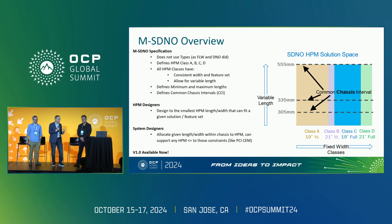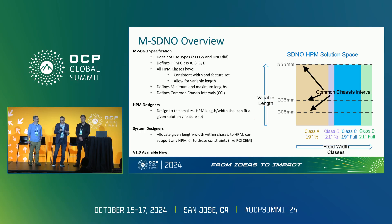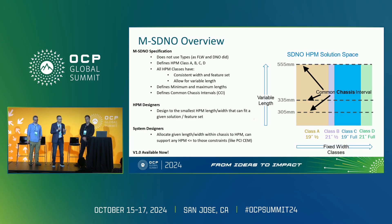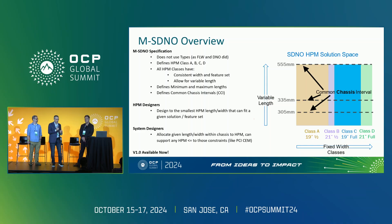If you're an HPM designer, you want to strive for the smallest HPMs for maximum possible adoption. If you're designing a chassis or system, you'd obviously like the biggest volume for HPMs for maximum compatibility, depending on your use case. Class A and class C will be our 19-inch focused form factors — think of A as half-wide and C as full-wide. B and D will be the same for the 21-inch rack, half-wide and full-wide.